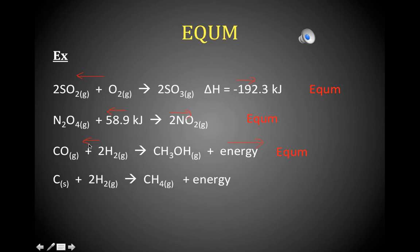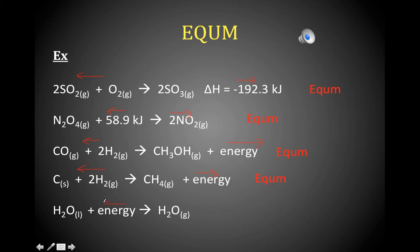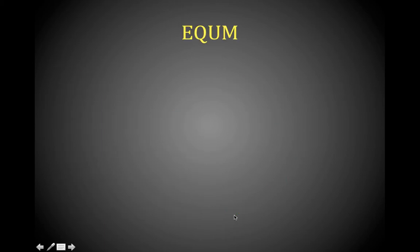Looking at the next reaction: exothermic — the right side is lower in energy, favors the right. We have one mole of gas on one side and two moles on the other, so more chaos on the product side. Arrows in opposite directions — equilibrium. The next one involves a physical change but the same rules apply: energy favors the left because the forward reaction is endothermic, but gases are more disordered so disorder favors the right. That's equilibrium. So we have five equilibrium examples so far.